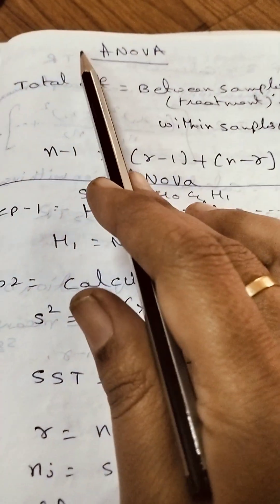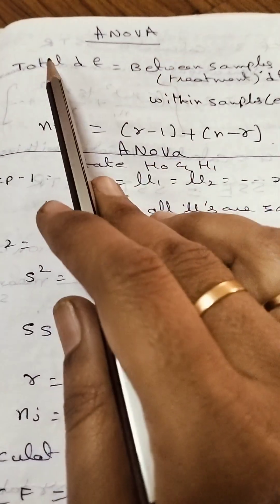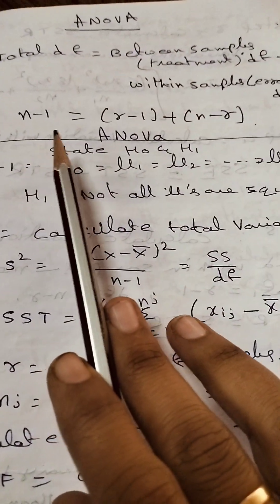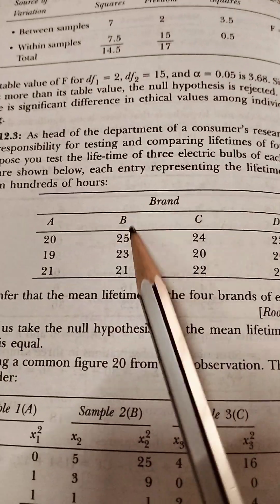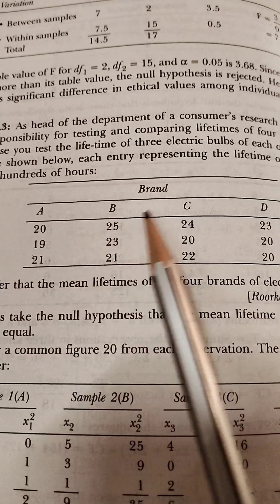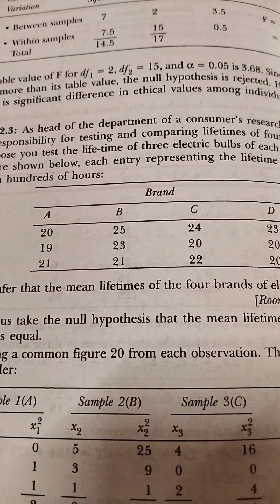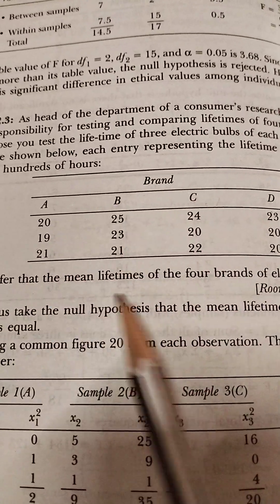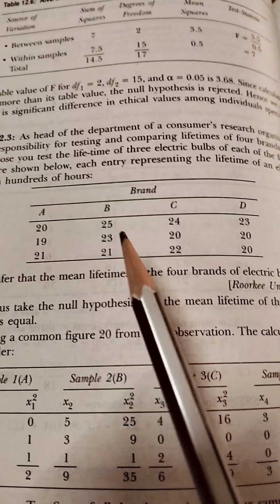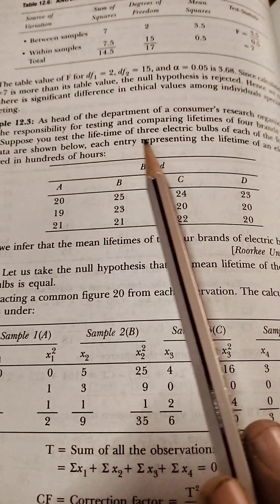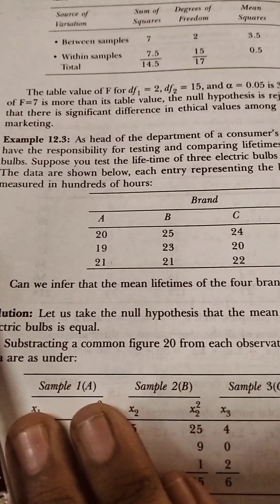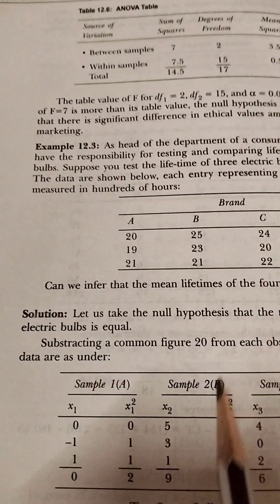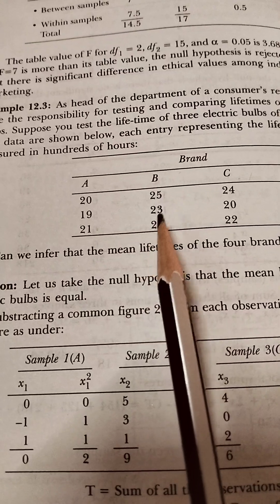The next problem is ANOVA — Analysis of Variance — a very important problem. First, I will tell you the steps. In one-way ANOVA, you have only columns A, B, C, D — only one objective will be there. First, you have to read the problem carefully to understand what they are asking and how to solve it.